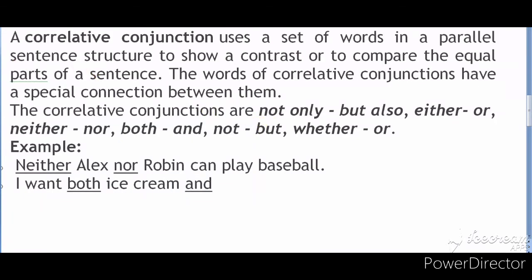You can read these examples. The correlative conjunctions include: not only...but also, either...or, neither...nor, both...and, and whether...or.